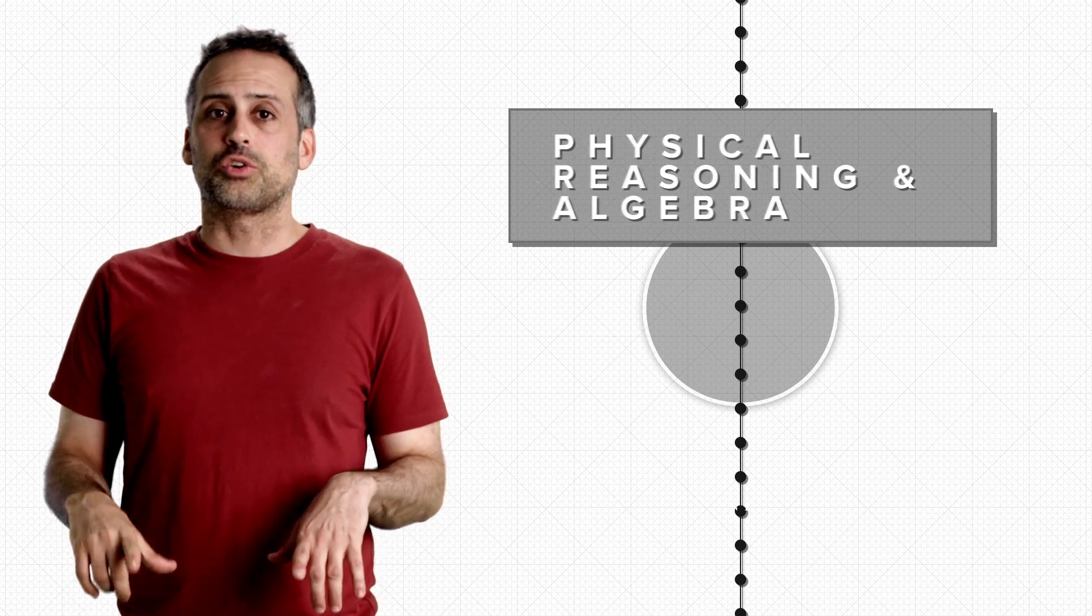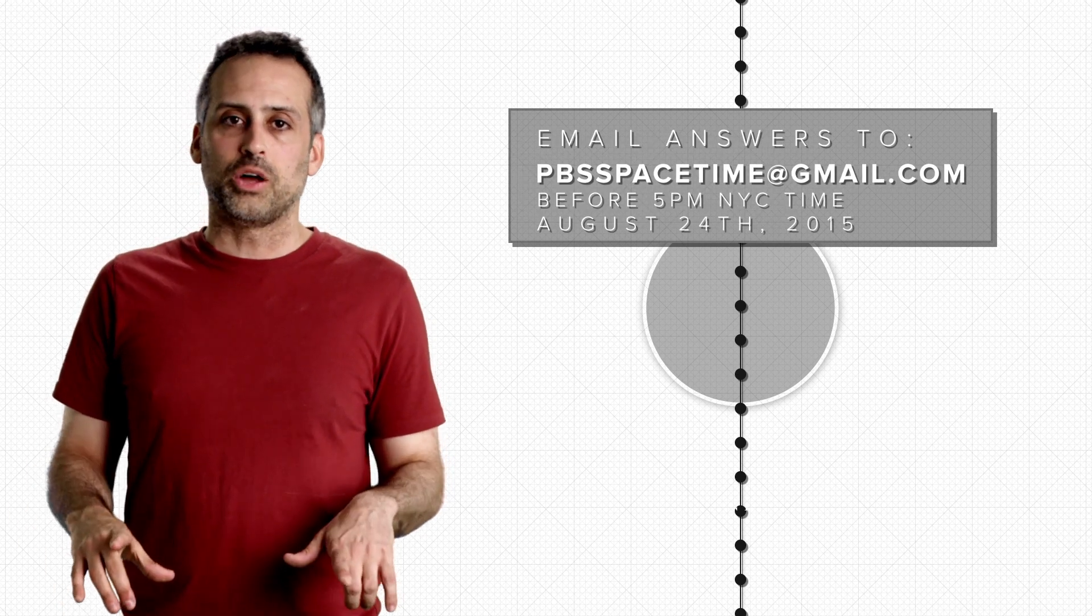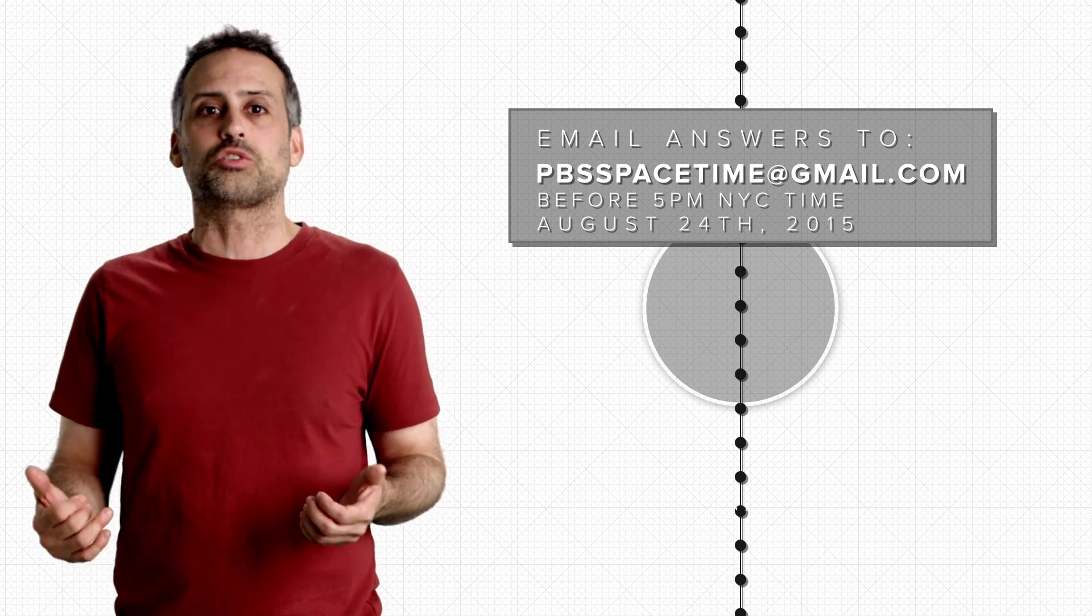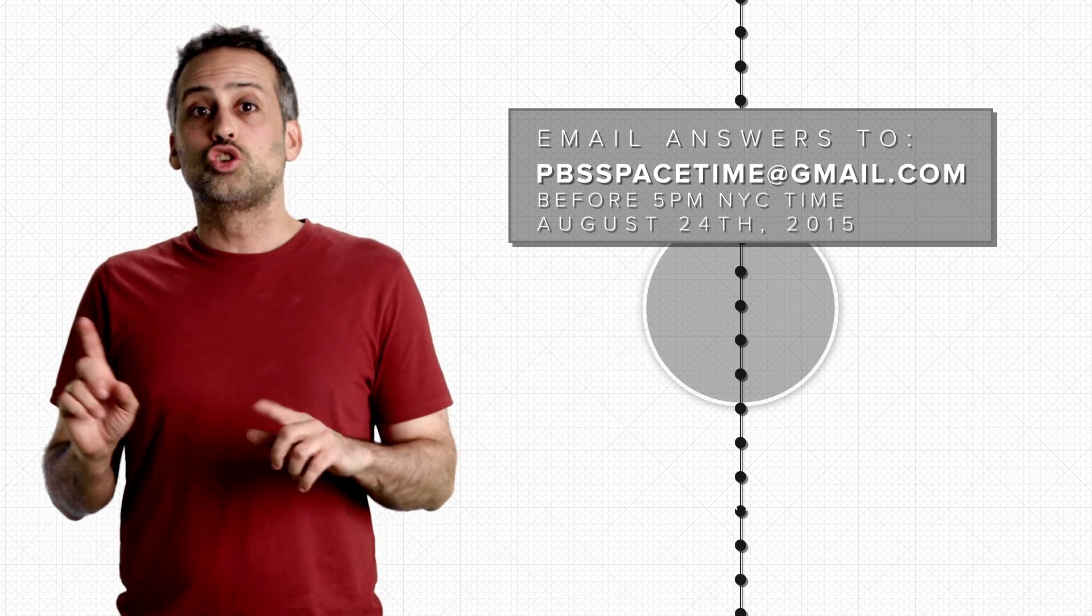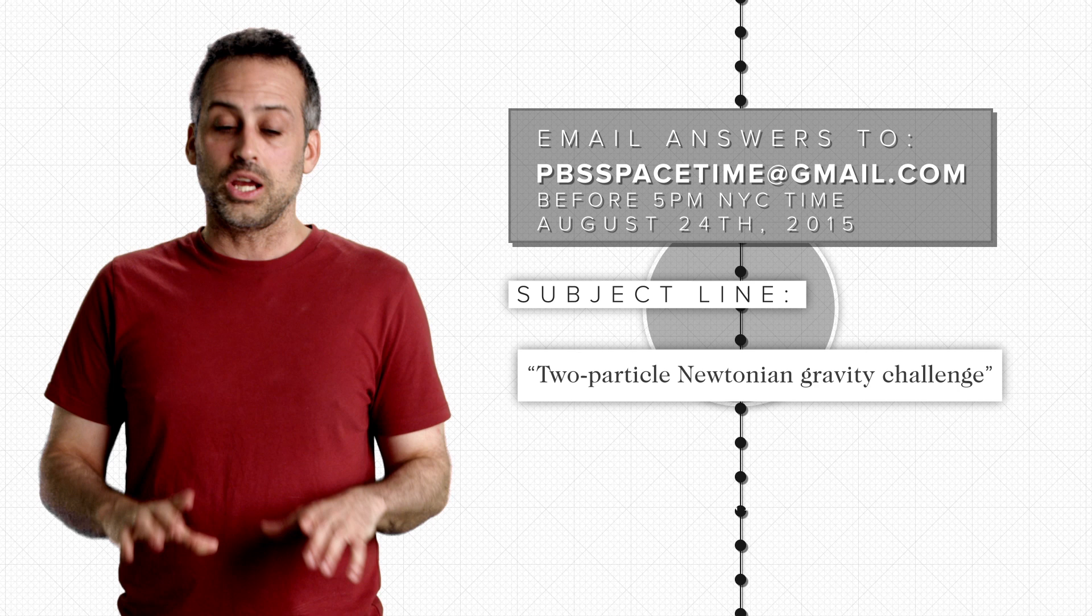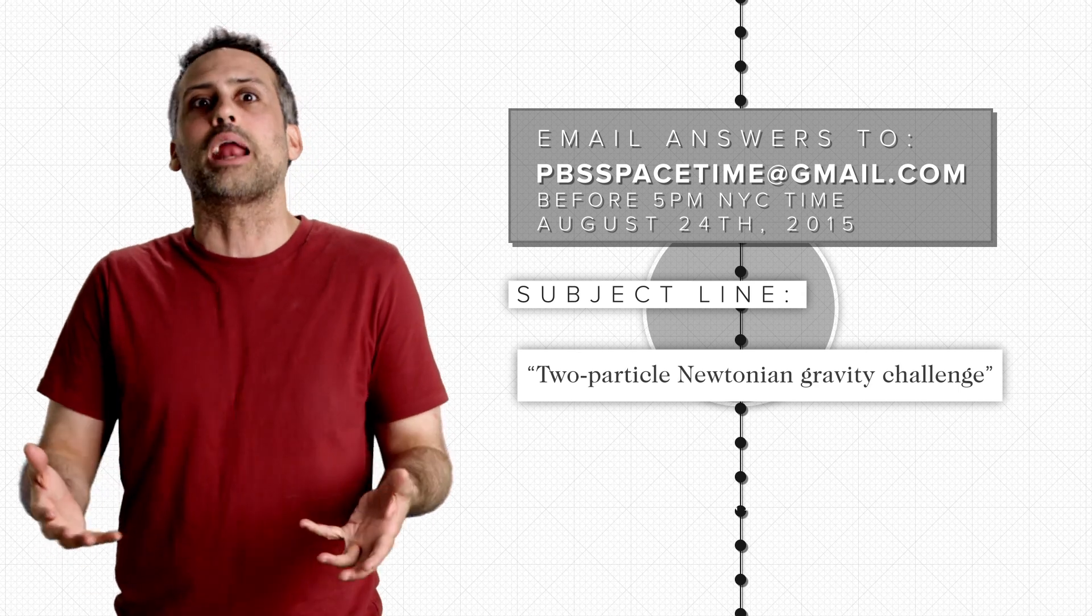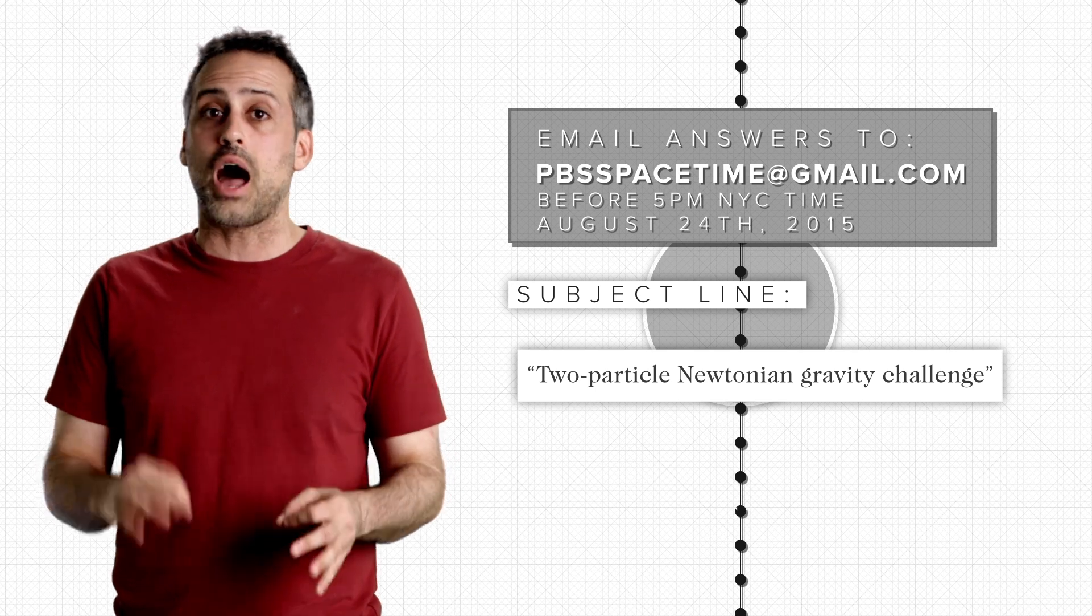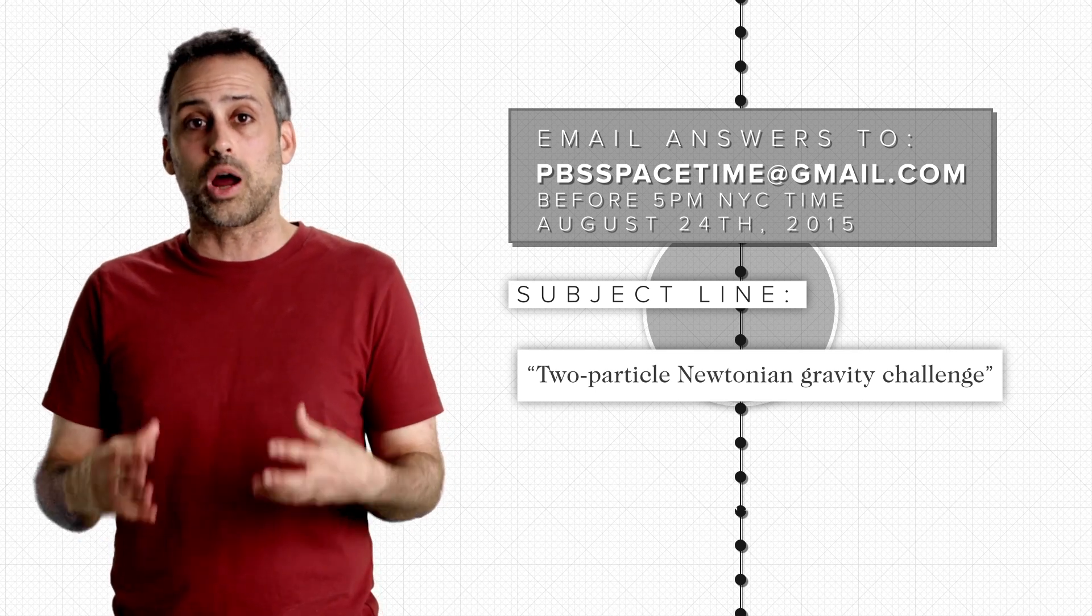You guys know the drill. Email your answers to PBSSpaceTime at gmail.com before 5 p.m. New York City time on the date that you see on the screen. Use the subject line two particle Newtonian gravity challenge. It's not case sensitive, and you should not include the quotation marks. But other than that, use this exact subject line, including the hyphen, because we filter these things automatically.